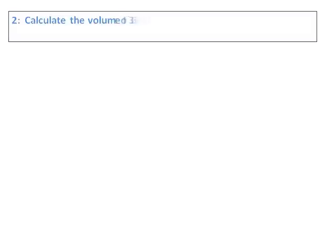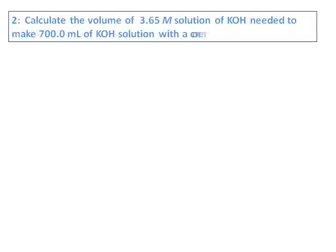Calculate the volume of 3.65 molar solution of potassium hydroxide needed to make 700 milliliters of potassium hydroxide solution with a concentration of 1.35 molar. This is a straightforward dilution question.